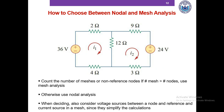We discussed nodal analysis in the earlier lecture — how do we choose between nodal and mesh analysis? If you're free to use any method, count the number of non-reference nodes and the number of meshes in the circuit. In nodal analysis the number of non-reference nodes equals the number of unknowns and equations. Similarly, in mesh analysis the number of meshes equals the number of unknown currents and equations needed. We take whichever method gives us fewer equations.